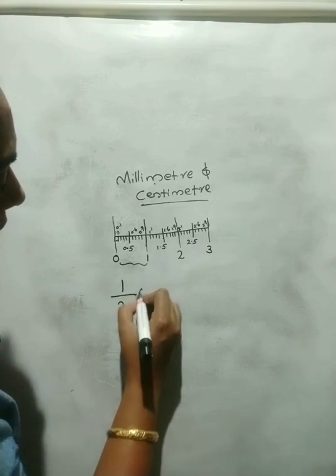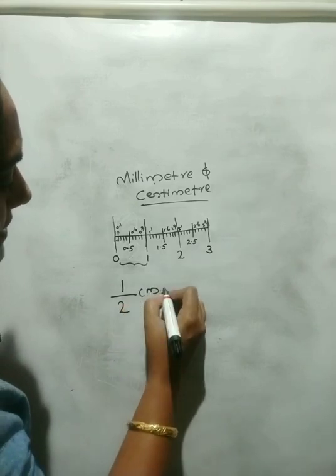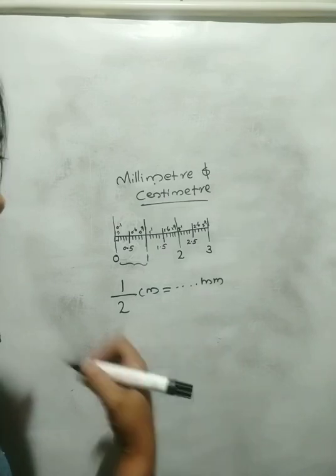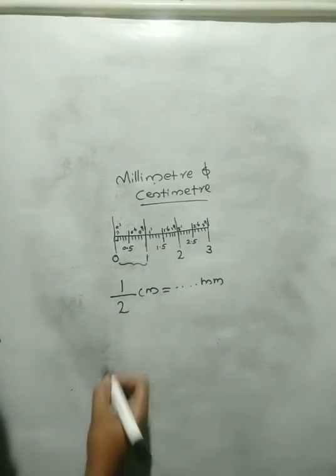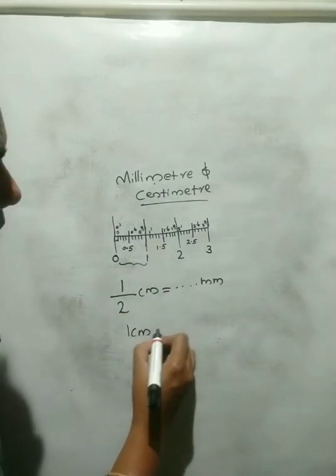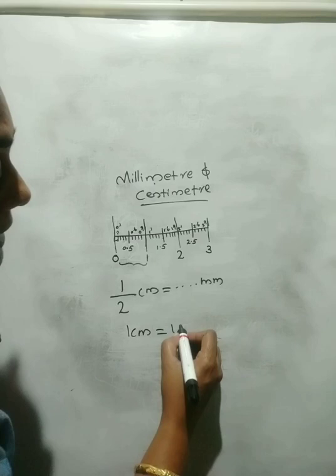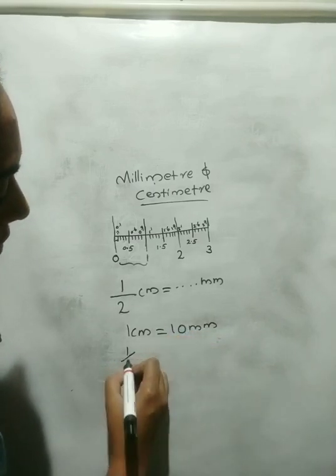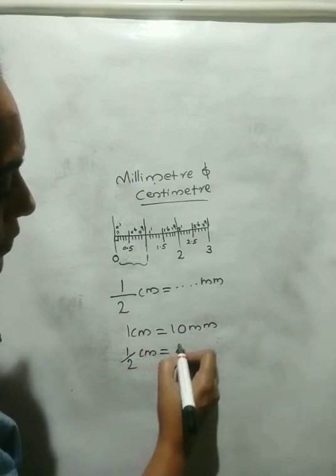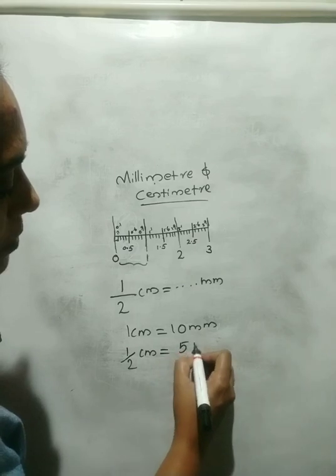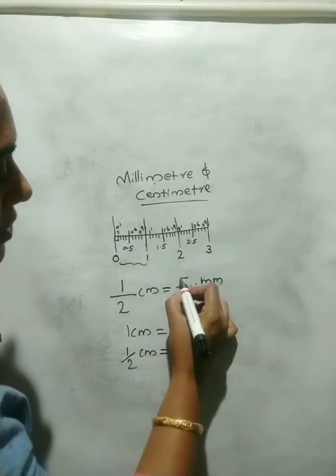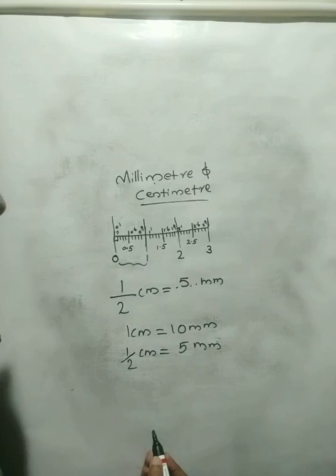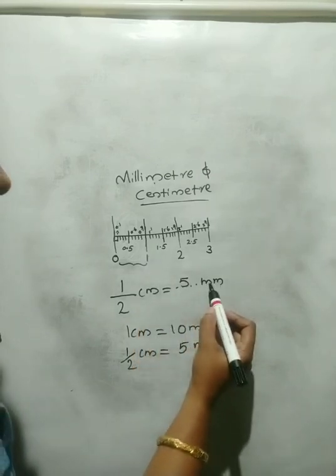Next: half centimeter equals how many millimeters? We know 1 centimeter is equal to 10 millimeters, so half centimeter will be 5 millimeters. The answer is 5 millimeters.